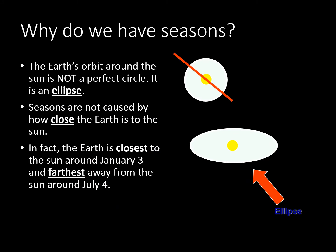Why do we have seasons? The earth's orbit around the sun is not a perfect circle — it is an ellipse. Seasons are not caused by how close the earth is to the sun. In fact, the earth is closest to the sun around January 3 and farthest away around July 4.